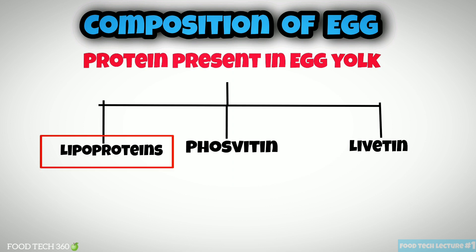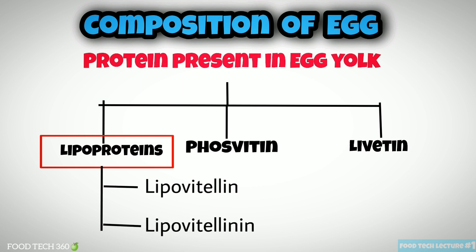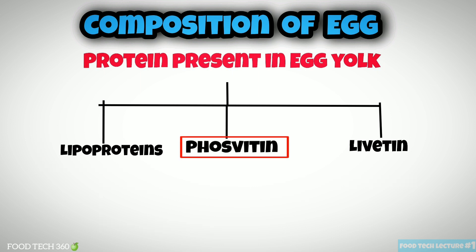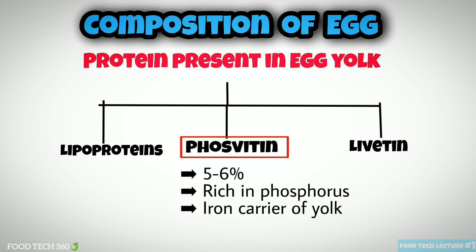Now let's see the proteins present in egg yolk. The major proteins in egg yolk are lipoproteins, which have excellent emulsifying properties. Lipoproteins are of two types: lipovitellins and lipovitellenin. Lipovitellins are high-density proteins comprising 16 to 18% of egg yolk solids. Phosvitin contains 5 to 6% of yolk solids; it is rich in phosphorus, binds ferric iron to form a soluble complex, and acts as the iron carrier of the yolk.